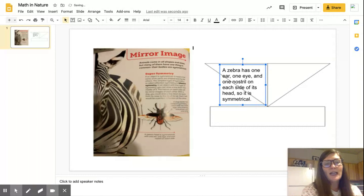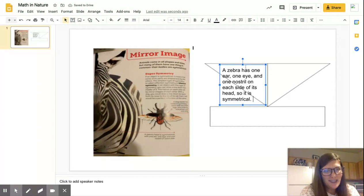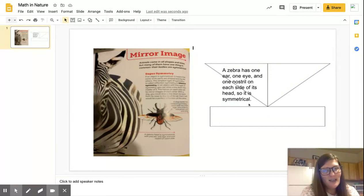That was just what I got from the text feature. So I'm going to type in here: a zebra has one ear, one eye and one nostril on each side of the head, so it is symmetrical. I looked at this text feature first, right? And that's what you do when you read nonfiction. You don't always look at the text first. Sometimes you look at the other interesting things on the page first. In a fiction book, you usually just read everything in order, but in nonfiction, we don't do that. I couldn't get the text boxes to make a triangle for our graphics funnel. So we're just going to have to go with it like this.